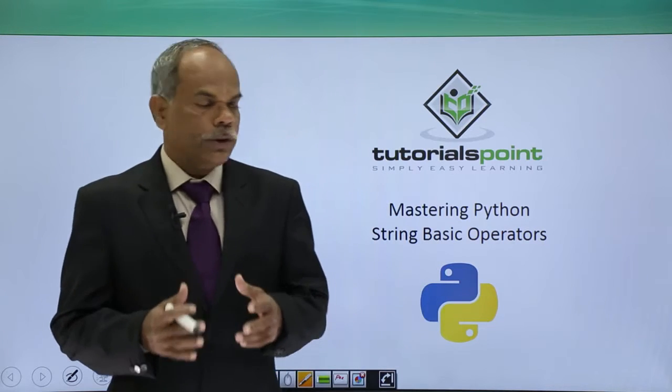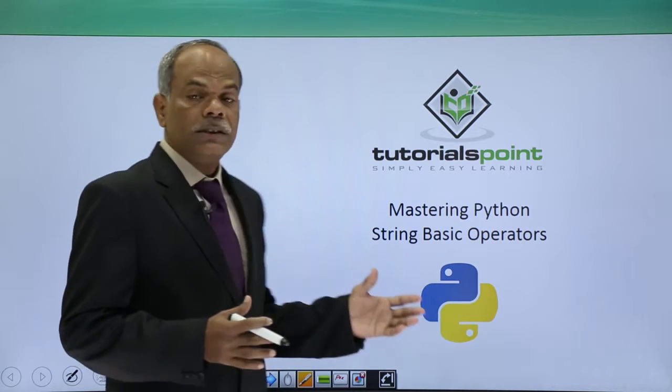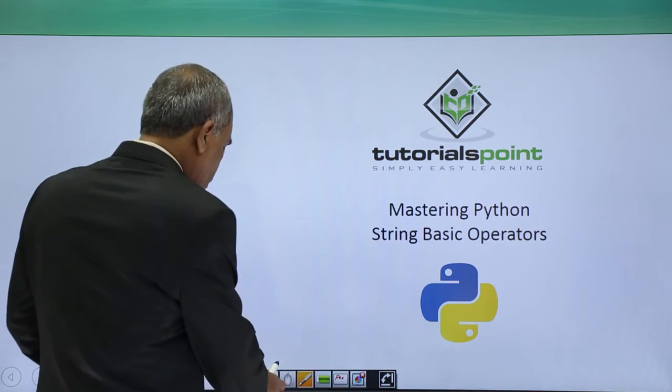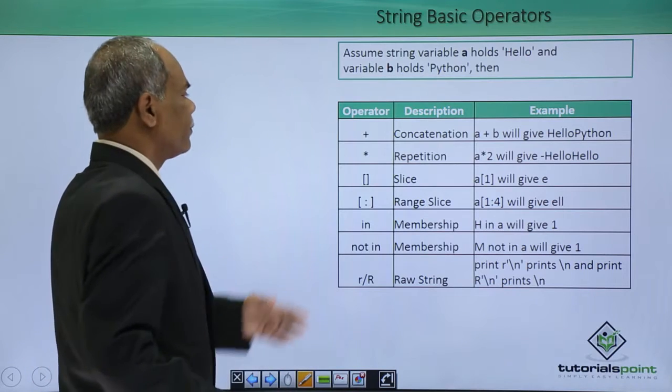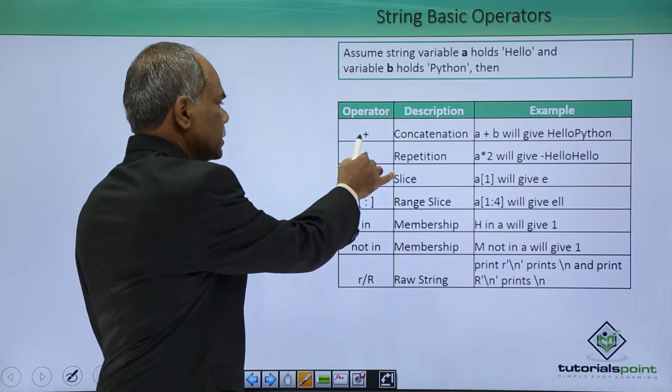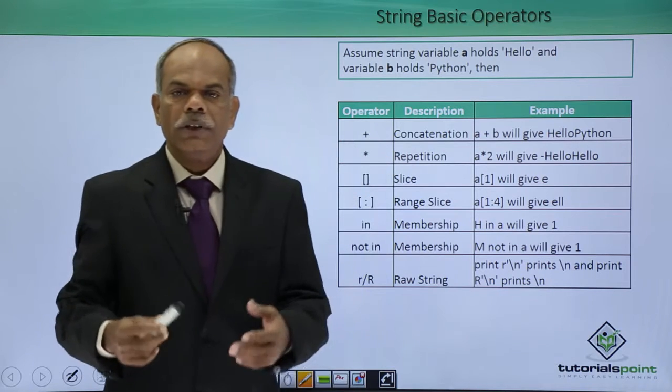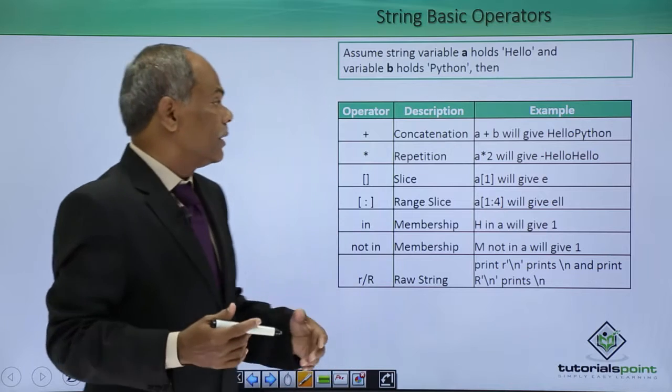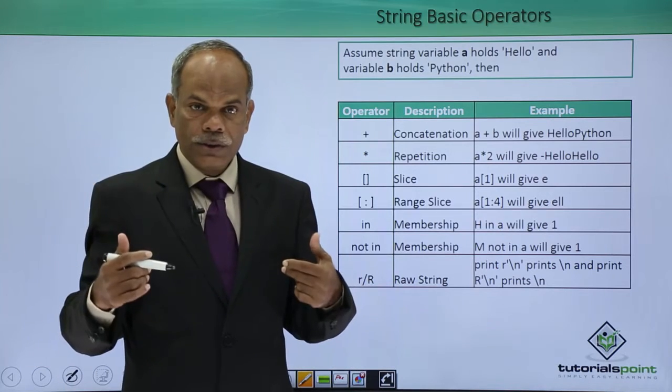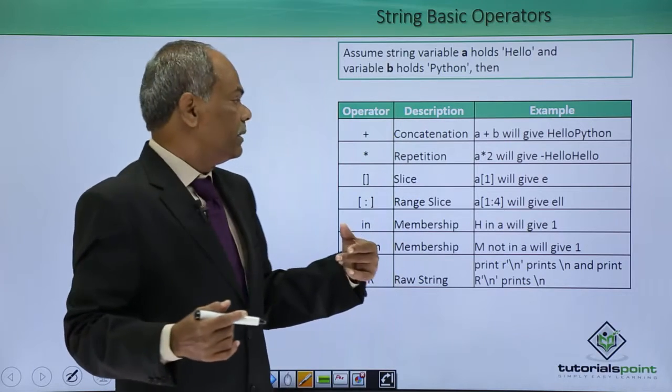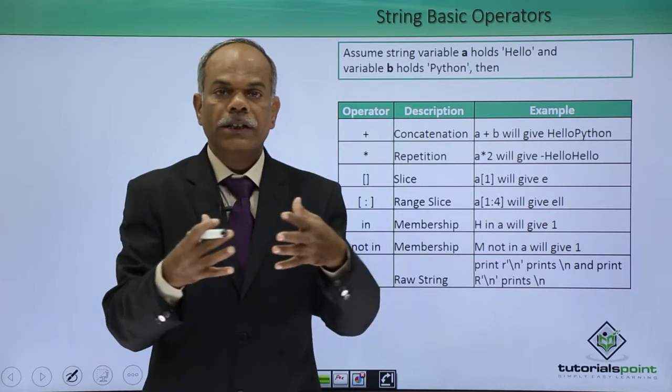Hello friends. In this video, we shall discuss different operators on string variables. Some basic string operations can be done by these operators. For example, the plus symbol, which you normally associate with numeric addition, if it is used with a string, if there are two string operands, then it will concatenate these two strings.